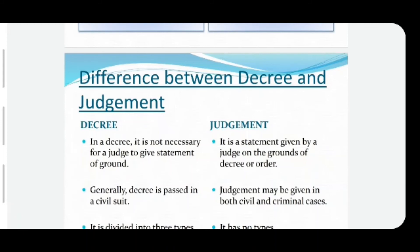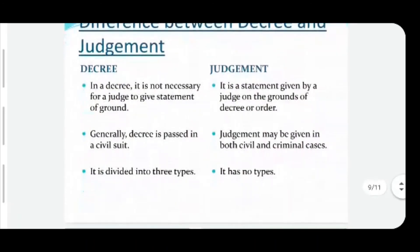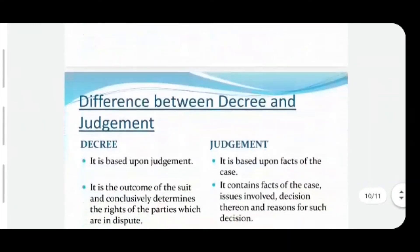Generally, a decree is passed in a civil suit, while a judgment may be given in both a civil suit and a criminal case. A decree is divided into three classes: preliminary decree, final decree, and partly preliminary and partly final decree, while a judgment has no classes or types. Next difference: a decree is based upon the judgment — as stated earlier, first the judgment comes and then the decree comes — so a decree is based upon the judgment, while a judgment is based upon the facts of the case.